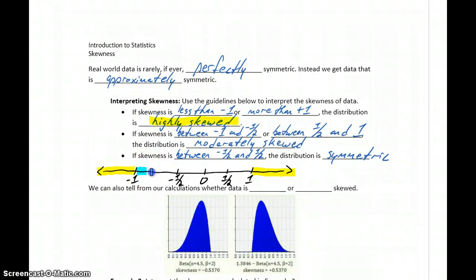If our value ends up being between negative one and negative one-half, or positive one-half and positive one, then that data is moderately skewed. And if we get a value that's between negative one-half and positive one-half, so somewhere in that range, then our data is symmetric. And again, whenever we talk about symmetric, we mean really approximately symmetric. Zero would be perfect, but anywhere in that range from negative one-half to one-half, we can consider to be approximately symmetric.